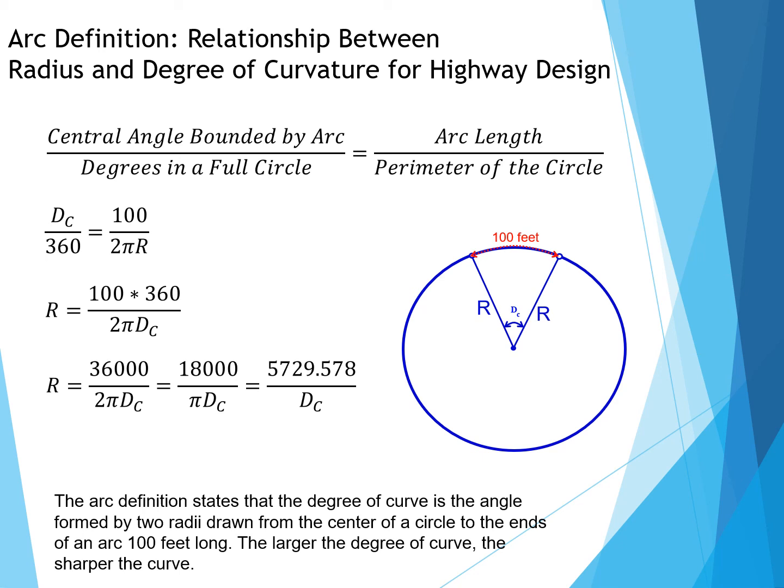So that's where that 5729.578 comes from. Moving back to 18,000 divided by pi, that's what that number represents. This is how the equation radius equals 5729.578 divided by degree of curve is derived, based on the arc definition that ties the relationship for the radius and degree of curve for highway design.